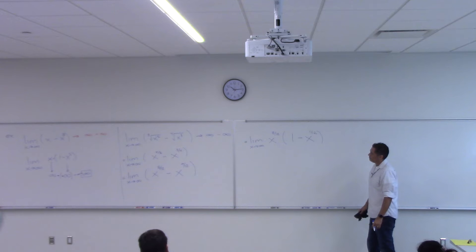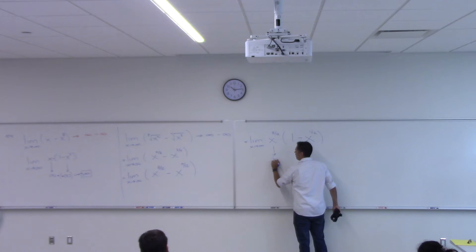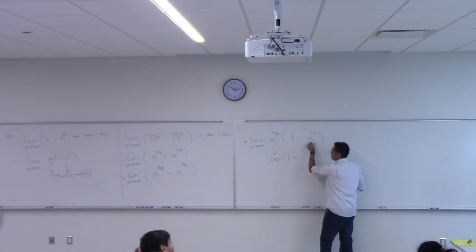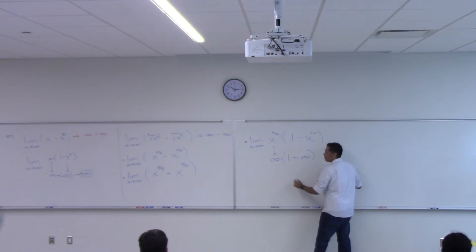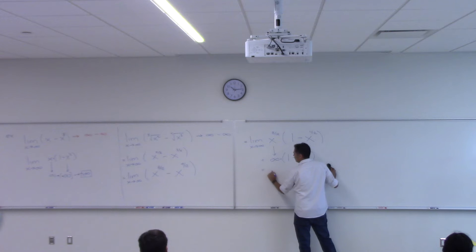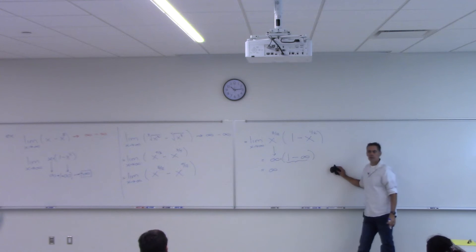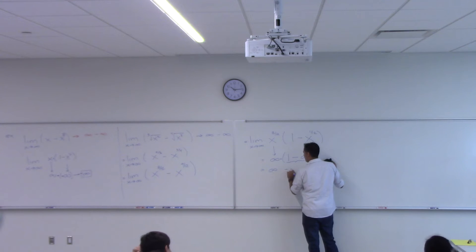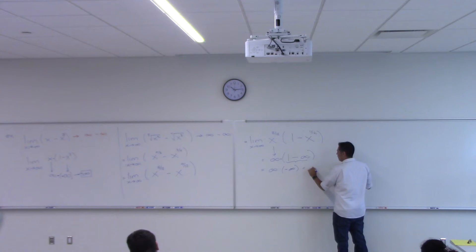Does this work? It should work, right? Because this is going to infinity, and then here it's 1 minus something going to infinity as well. But now you have multiplication. This is infinity times these two together — what's these two together? Negative infinity — 1 take away a huge number. So you're multiplying a positive times a negative, so you're going to get negative infinity.